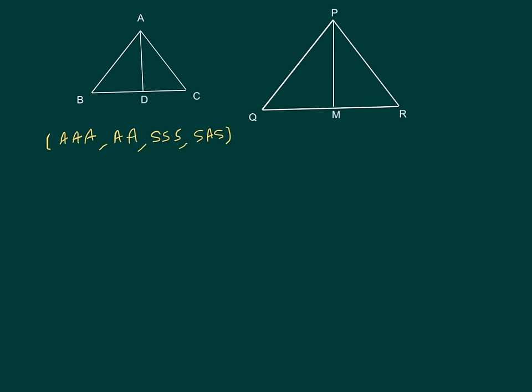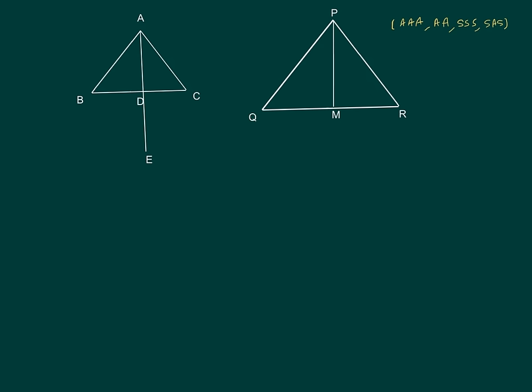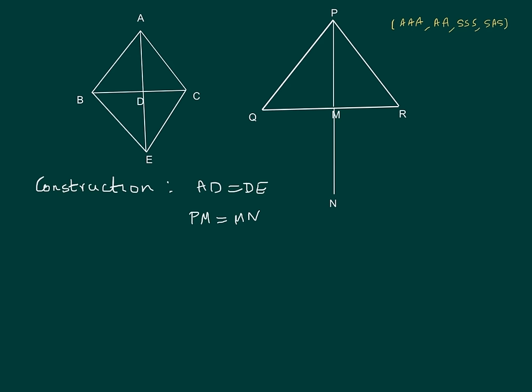For that we need to do the following construction. Construct DE equal to AD and MN equal to PM. Now join B to E and C to E. Similarly we will join Q to N and R to N.